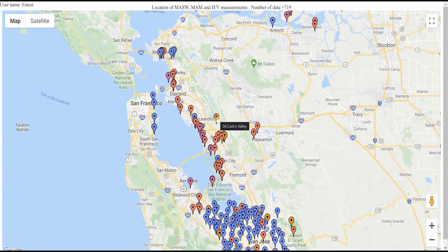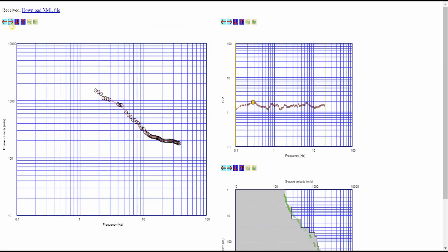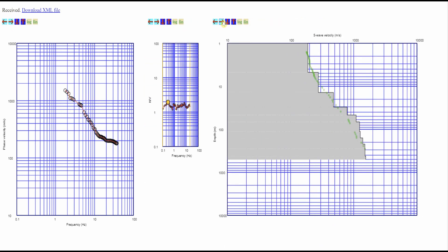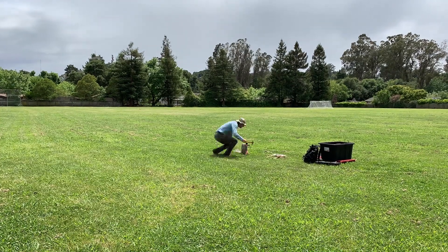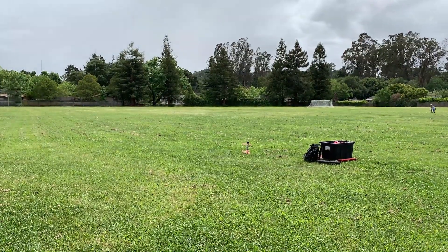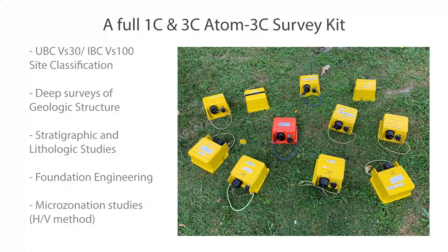VS surveys require multiple channels — 10 to 11 channels being the minimum recommendation, though you can use as few as four channels. VS surveys use vertical component data. An HV survey needs three-component data: two horizontal and one vertical. A VS survey requires just vertical data. With a system of multiple 1C and one 3C seismograph, you can collect both HV and VS in a single survey. This data can be used for UBC VS30 or IBC VS100 site classifications, deep surveys of geologic structure, stratigraphic and lithologic studies, foundation engineering, and microtremor studies, which is the HV method.